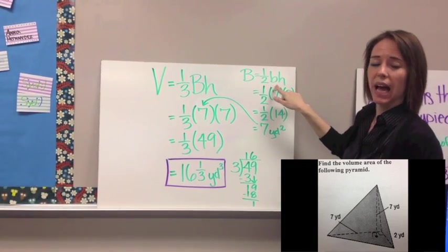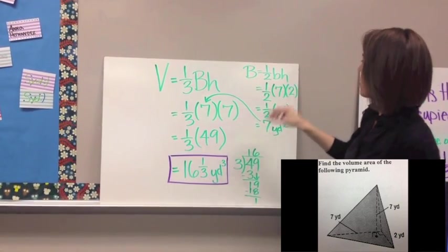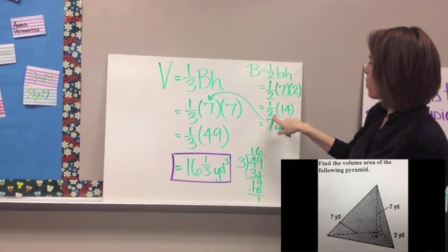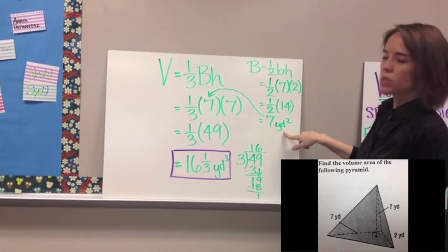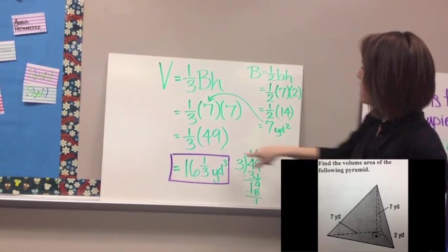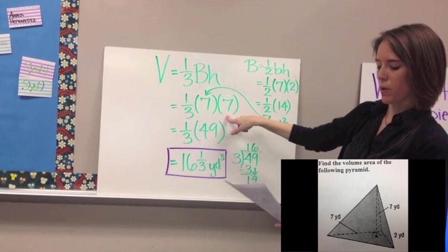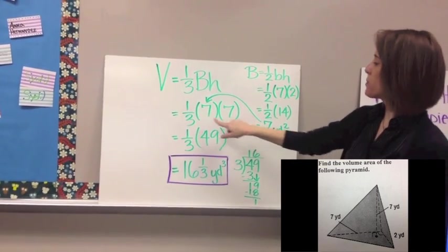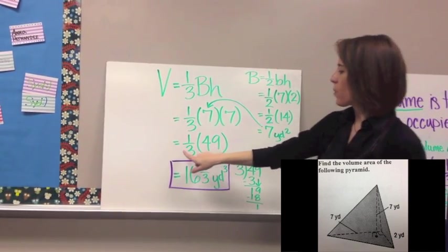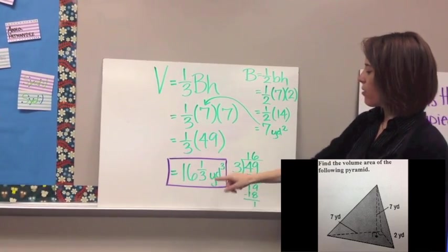The base is the base of the triangle, and the height is the height of the triangle — they must be perpendicular to each other. So we have 7 times 2, which is 14, then multiply by 1/2 (same as dividing by 2), which gives us 7 yards squared as the area of the base. We plug that in for area of the base. The height of the pyramid is 7, so we do 7 times 7, which equals 49. Then divide by 3, giving us 16 and 1/3 yards cubed.